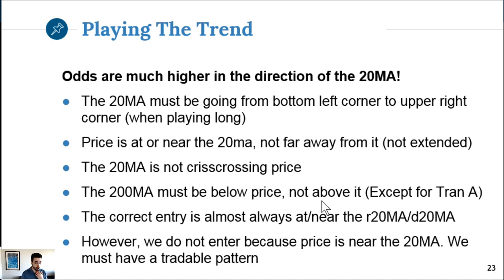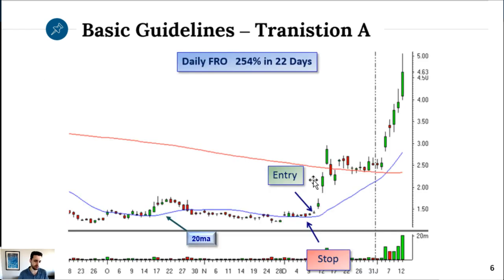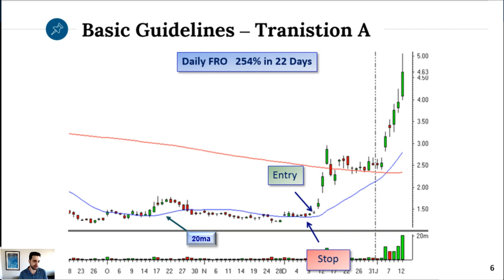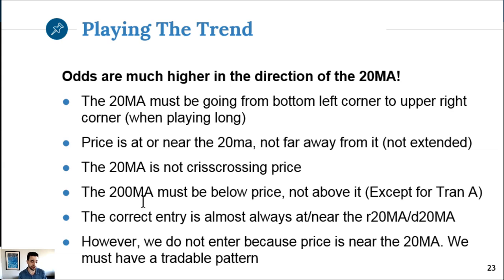The 200MA must be below price, not above it, when playing long. If you're playing a stock already in a well-established uptrend, you want it above the 200. If you're playing a Transition A setup, it's going to be below the 200 - that's okay. For a well-established uptrend, if it's below the 200, the 200MA calculates the average price of the last 200 bars, meaning it's not as bullish as you think.